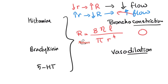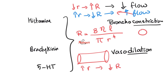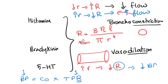Histamine on blood vessels tends to be a vasodilator for the most part — so vessels dilate, radius goes up, and resistance decreases. Blood pressure equals cardiac output times total peripheral resistance. As resistance decreases, blood pressure decreases. So histamine tends to cause hypotension, and that's why patients with anaphylaxis or anaphylactic shock tend to have low blood pressure.